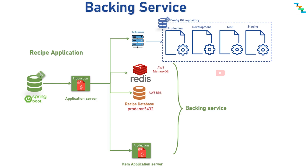For example, if the Postgres database is corrupt in production, the application must be capable of switching databases without any modification in the app codebase, by just changing the configuration at runtime.